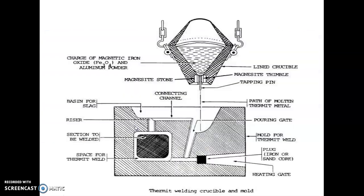Option C is correct. In thermite welding, alumina is ignited in the crucible and poured into the part where the gap has to be filled in.